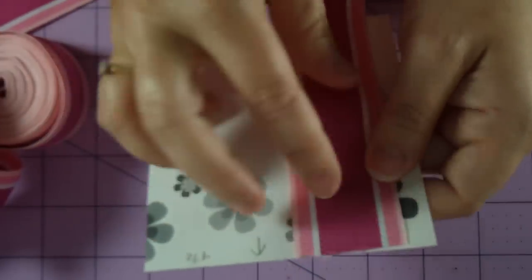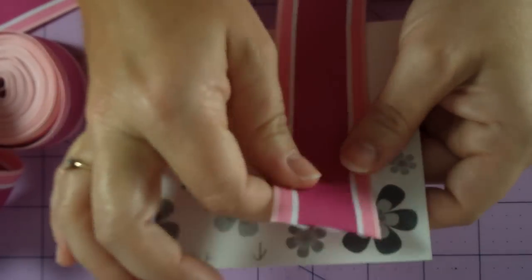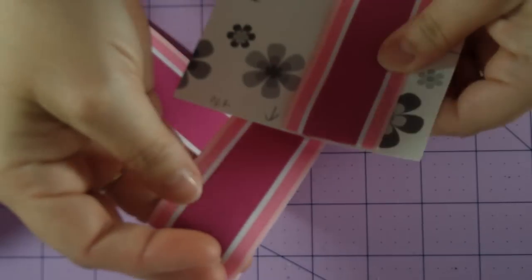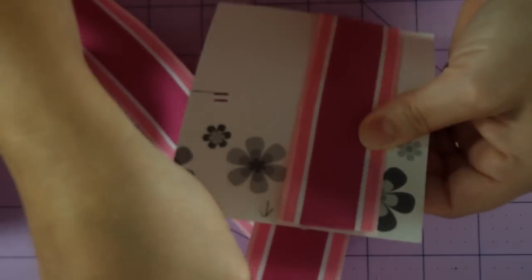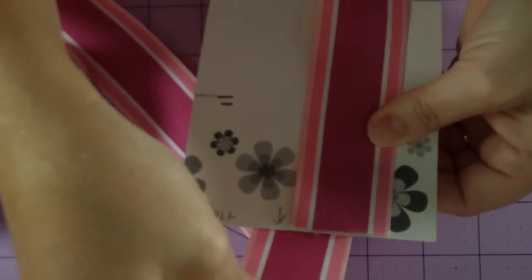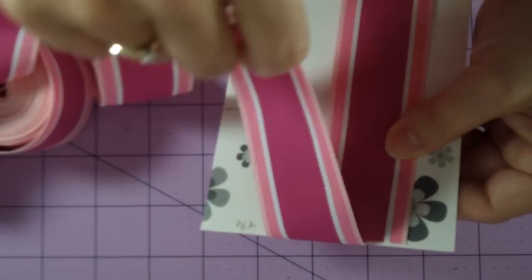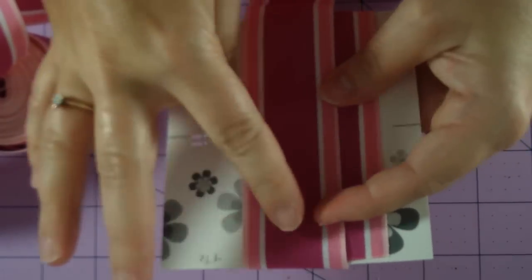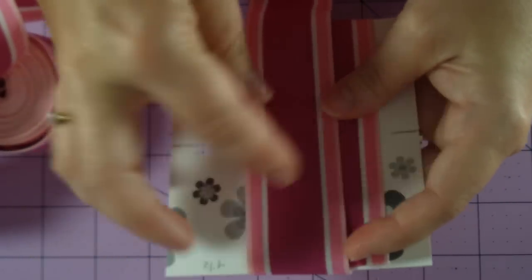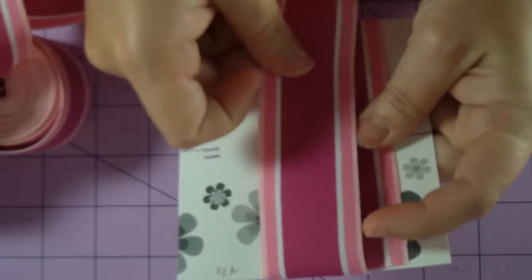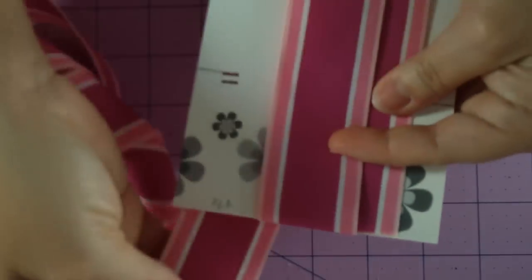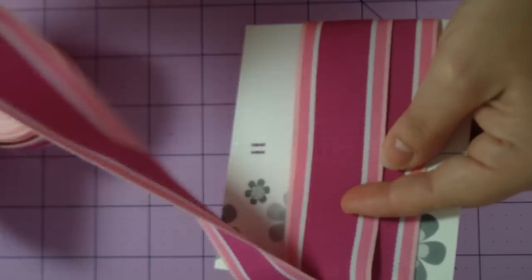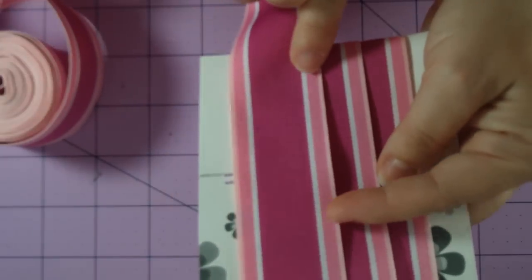You're going to take your ribbon and start at the top and place it right along the edge. Then you're just going to wrap and you don't want to pull so tight to where you bend your paper. You just want to make it just right around and then you're going to overlap about half an inch.